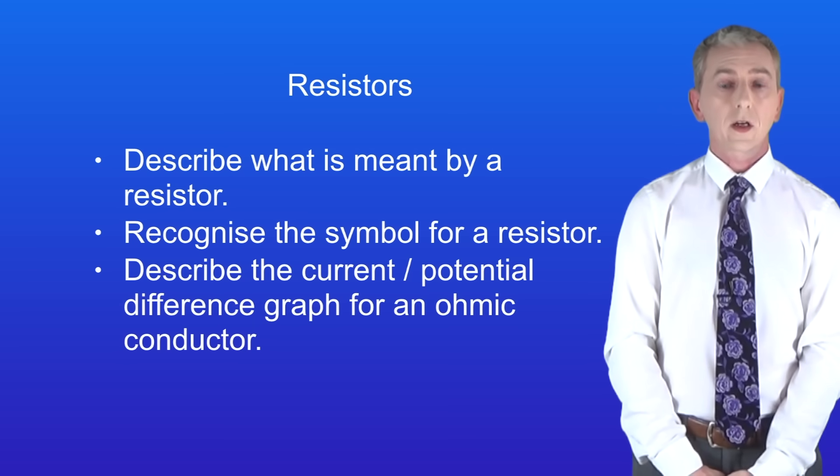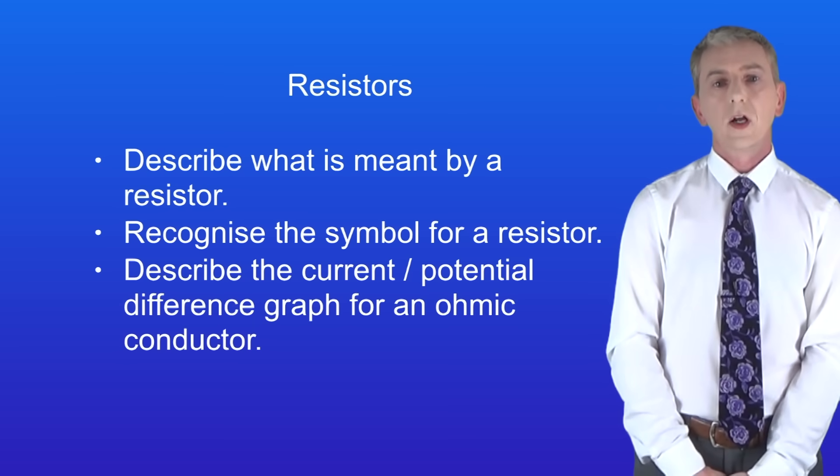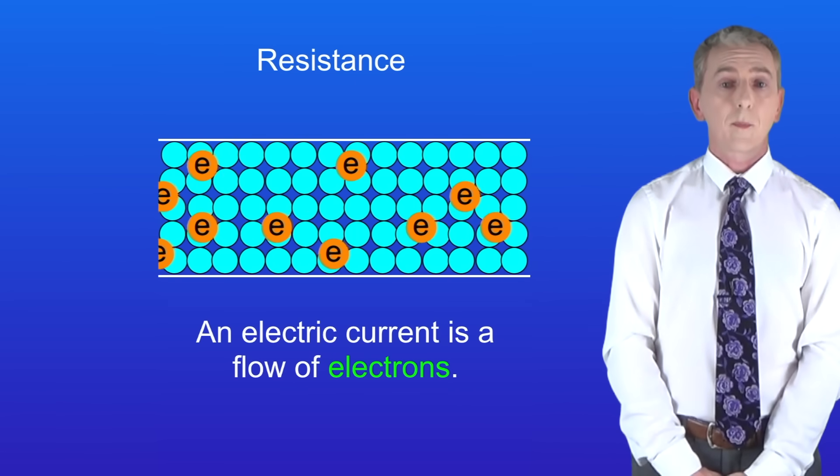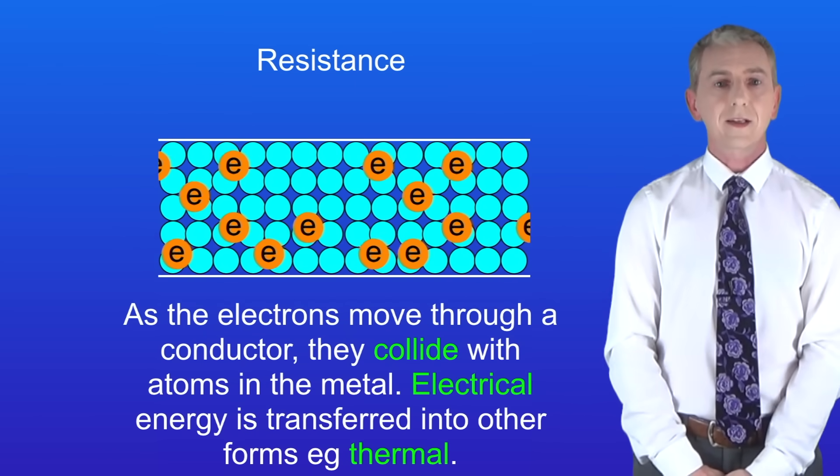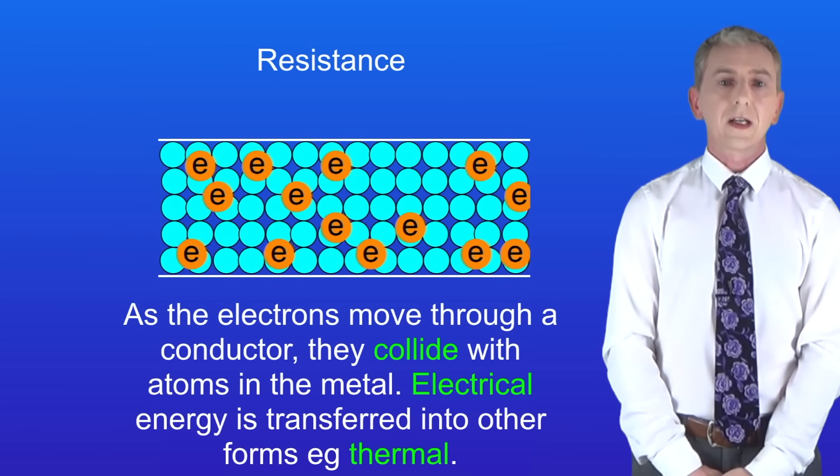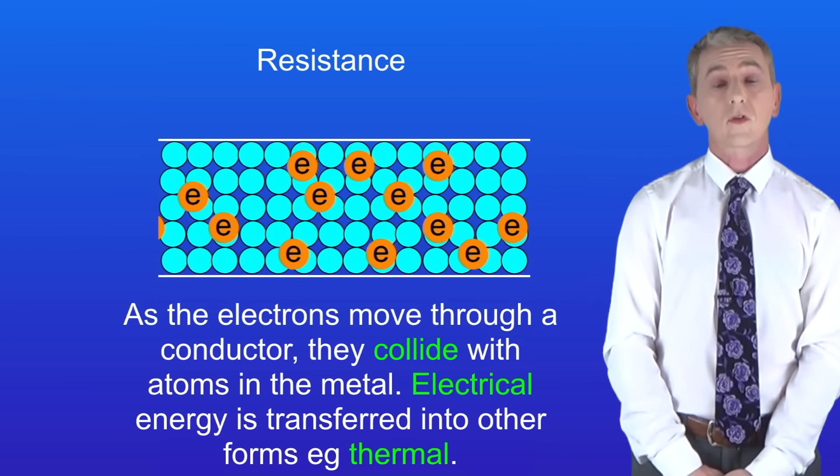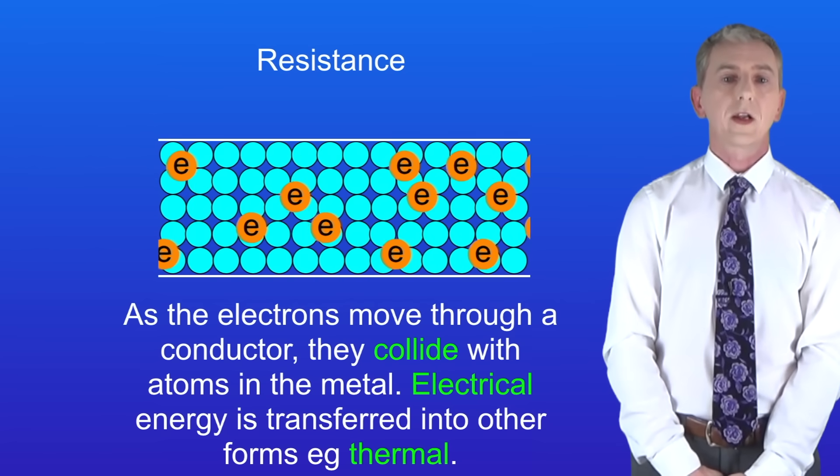In the last video we started looking at the idea of resistance. Remember that an electric current is simply a flow of electrons. As the electrons move through a conductor they collide with atoms in the metal. This causes the electrical energy carried by the electrons to transfer into other forms of energy such as thermal.